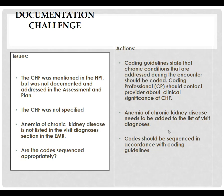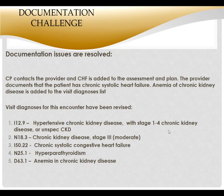Once the CHF question is resolved, the visit diagnosis sequence would be: I12.9 first (hypertensive chronic kidney disease), then chronic kidney disease stage three moderate, then chronic systolic congestive heart failure, then hyperparathyroidism, then chronic anemia. The hypertensive chronic kidney disease is what he was primarily having trouble with during that visit; the rest were basically follow-up items.